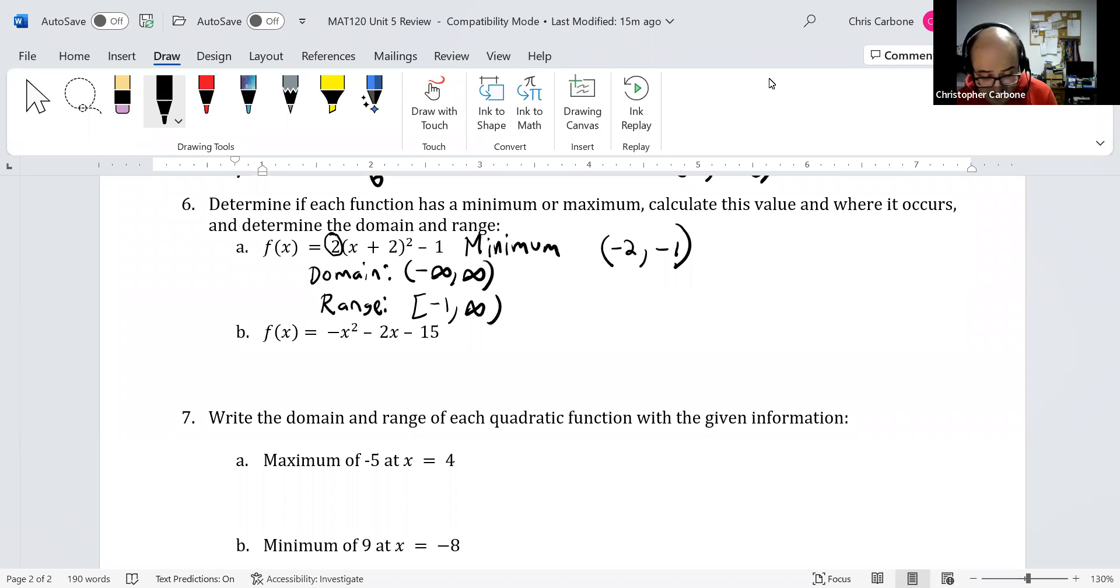For f(x) = -x² - 2x - 15, we could do -(-2) / (2 × -1).